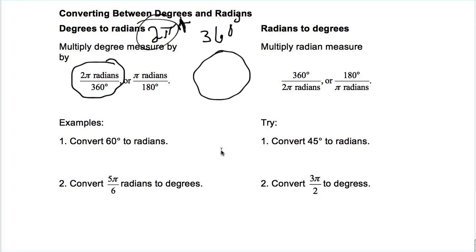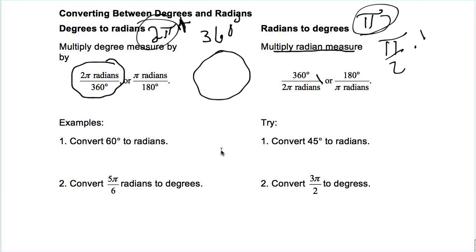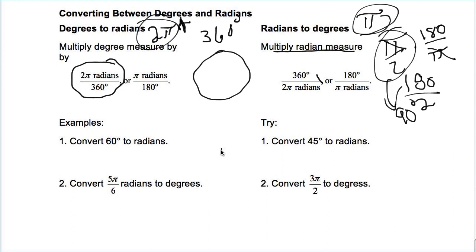Going from radians to degrees, take the radian measure — which is in terms of pi — and multiply by the reciprocal: 360 over 2π, or more simply 180/π. For example, π/2 times 180/π: the pi symbols cancel, leaving 180 ÷ 2 = 90. So π/2 radians is the same thing as 90 degrees.